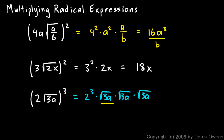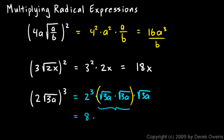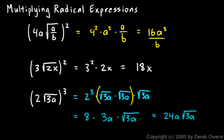Now two of these square roots of 3a can be thought of as the square root of 3a squared. Those two together can be considered one of these things squared, so the square root and the squaring undo each other. So I have 2 cubed, which is 8, times 3a, and then I still have this square root of 3a on the end. Simplifying that gives me 24a times the square root of 3a.